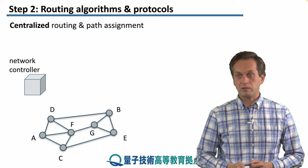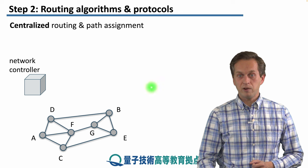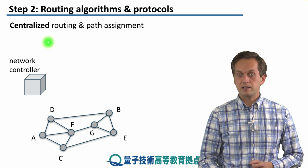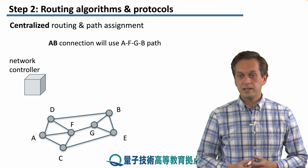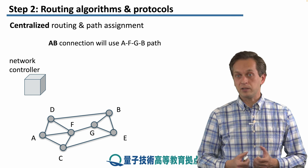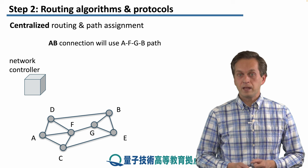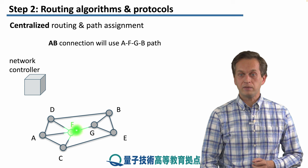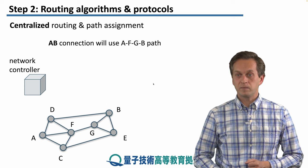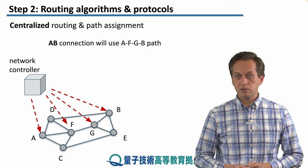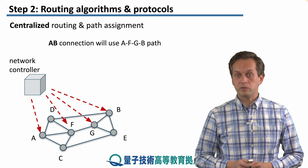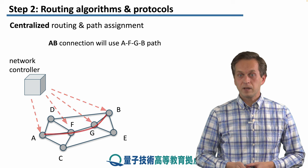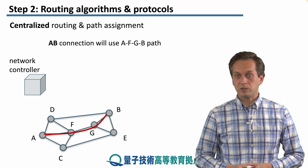Let's begin with centralized routing algorithms. We have our network of seven nodes and a centralized network controller. If A and B are trying to establish an entangled connection, the network controller computes: please use path A to F, F to G, G to B. It creates instructions for the relevant nodes — when to entanglement swap, how to purify — and then they can establish the connection between A and B.